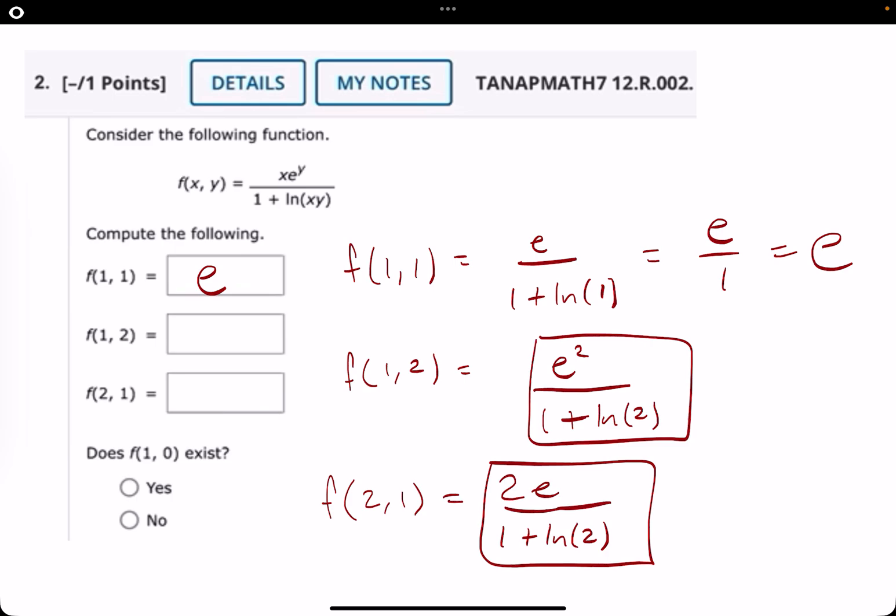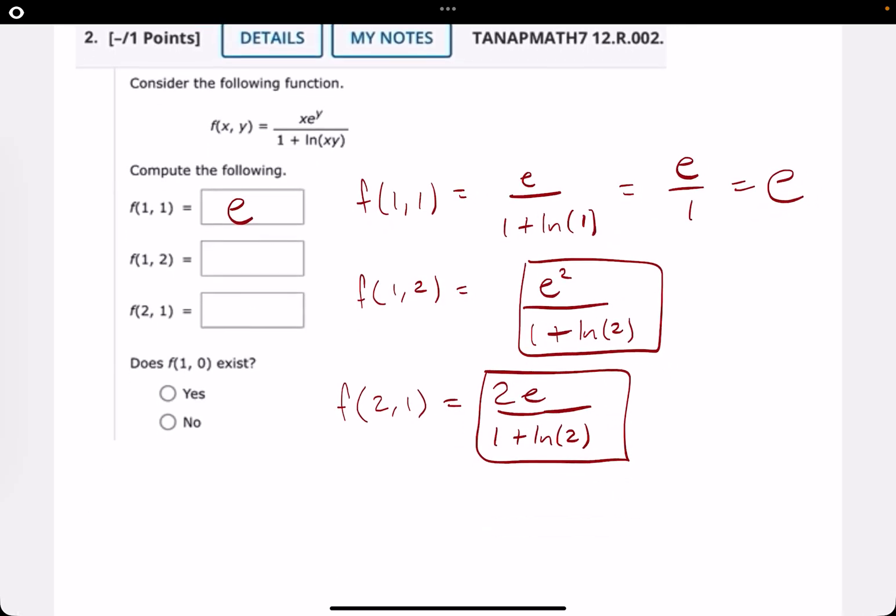So they ask, does f of 1, 0 exist? That's a great question. If we do 1, 0, we're going to get 1e to the 0 over 1 plus ln of 0 times 1, which is 0.